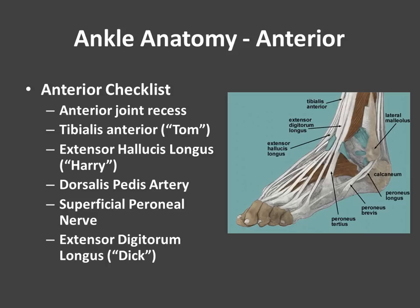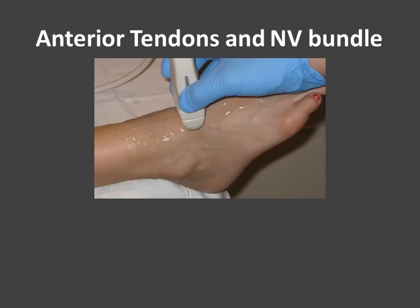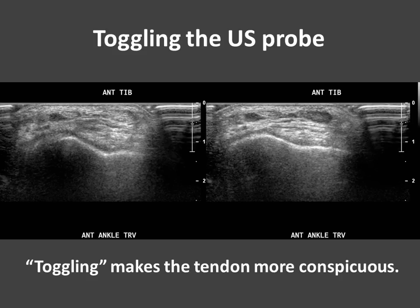Let's move on to the anterior ankle. The anterior ankle checklist includes the anterior joint recess, the extensor tendons, and the neurovascular bundle. The extensor tendons are tibialis anterior, extensor hallucis longus, and extensor digitorum longus — or Tom, Harry, and Dick. If you place your probe in the longitudinal position along the anterior joint, you'll see the tibia and talus in profile and the anterior joint recess. Turning the probe transversely, we can see all of the extensor tendons laid out very nicely, and we also catch the artery. I want to emphasize toggling your ultrasound probe to take advantage of anisotropy and make the tendon much more conspicuous.